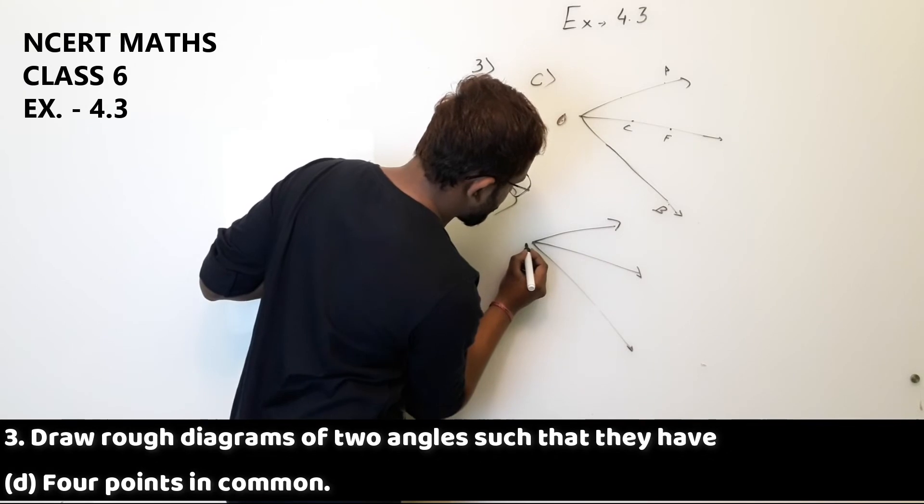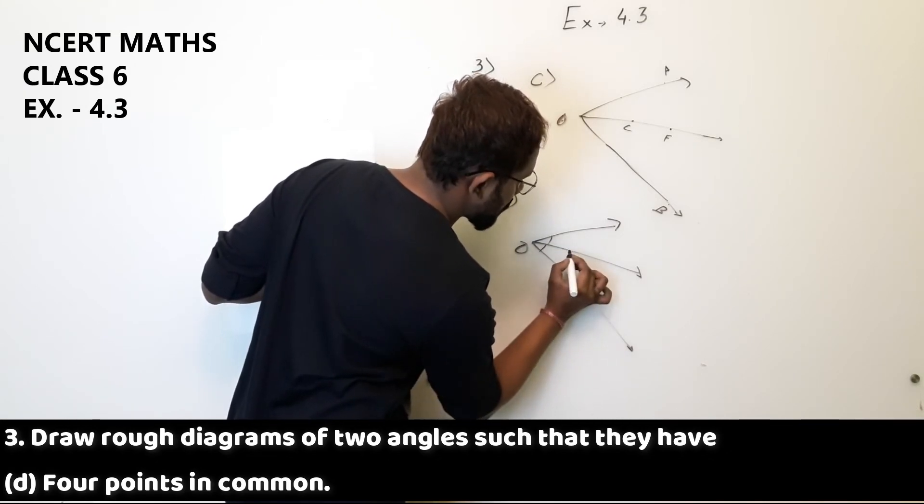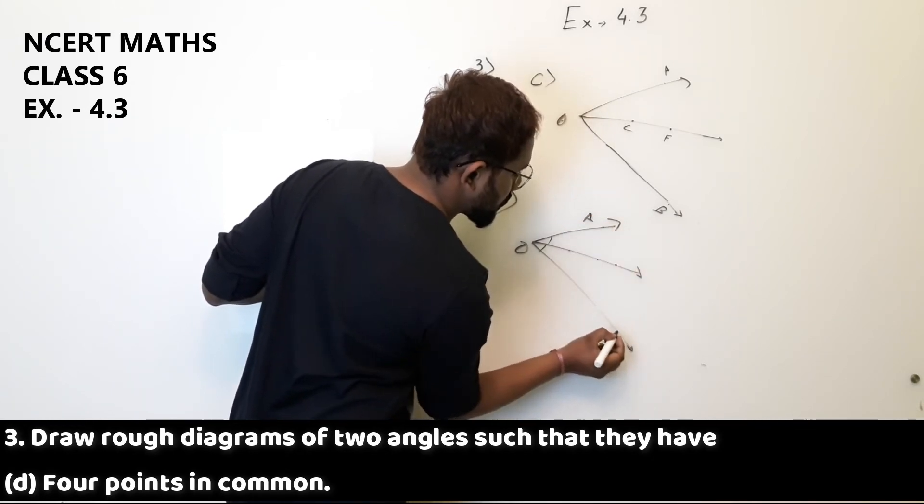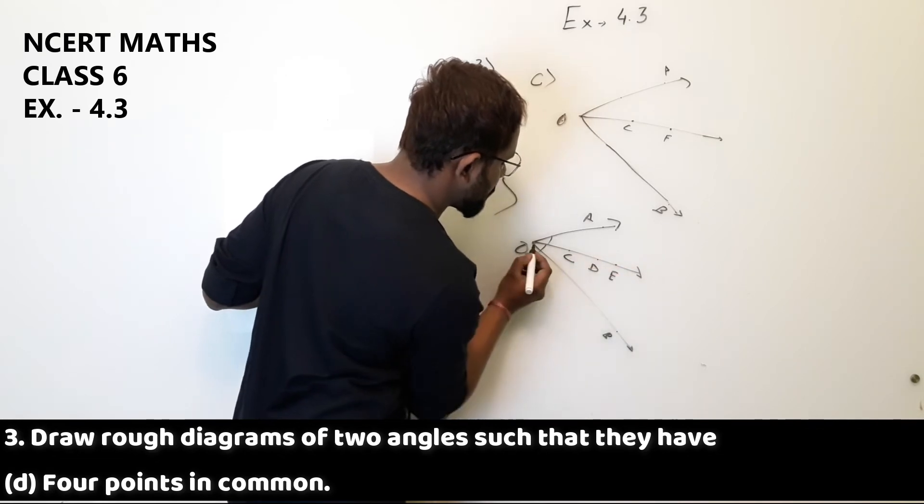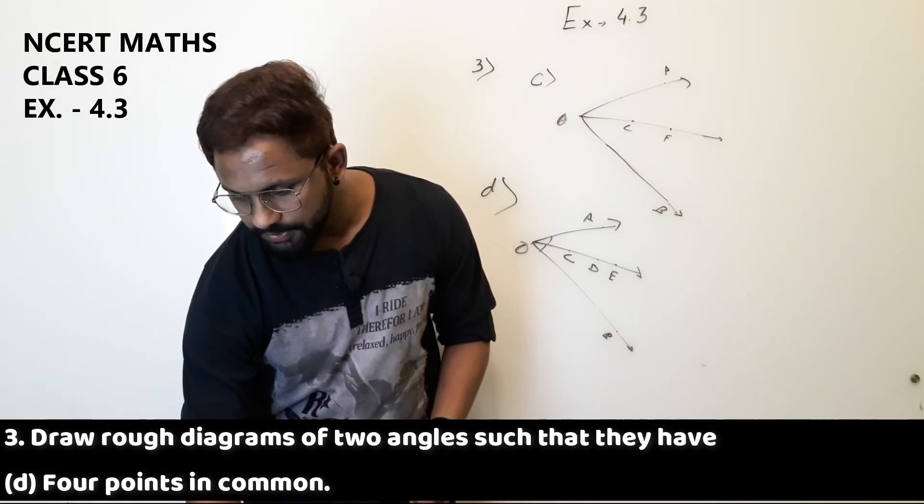This is a common point for both this angle and this angle. This, this, A, B, C, D, E. These four points are common for these two angles.